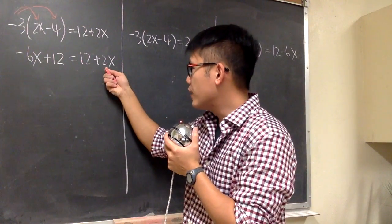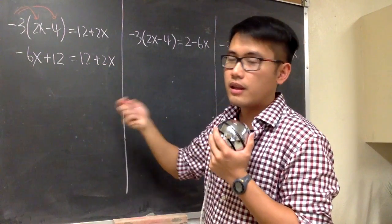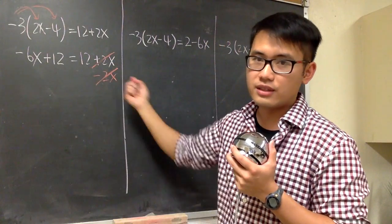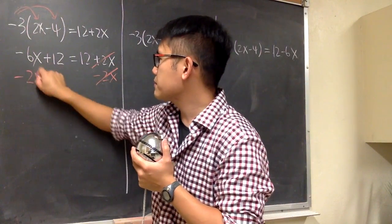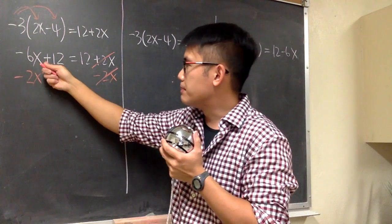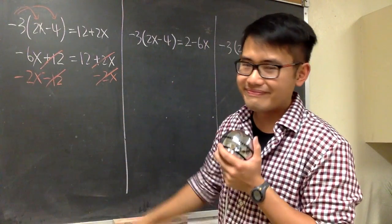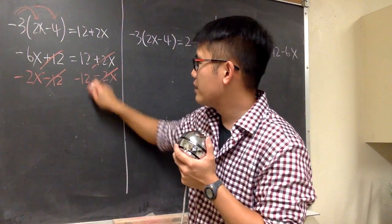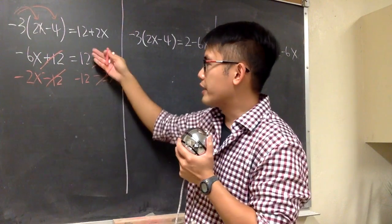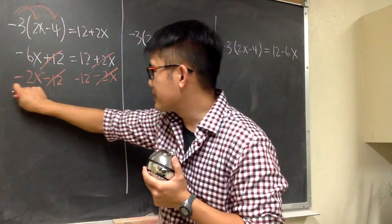I want to move the 2x to the left-hand side. This is plus 2x, so let's subtract 2x so that this and that will cancel — that's the purpose. And then I want to move the number from the left to the right. This is positive 12, so that's minus 12, so that this and that will cancel. And that's also minus 12 here. Right here I line up the x terms, and right here I line up the number terms — that's also really important.